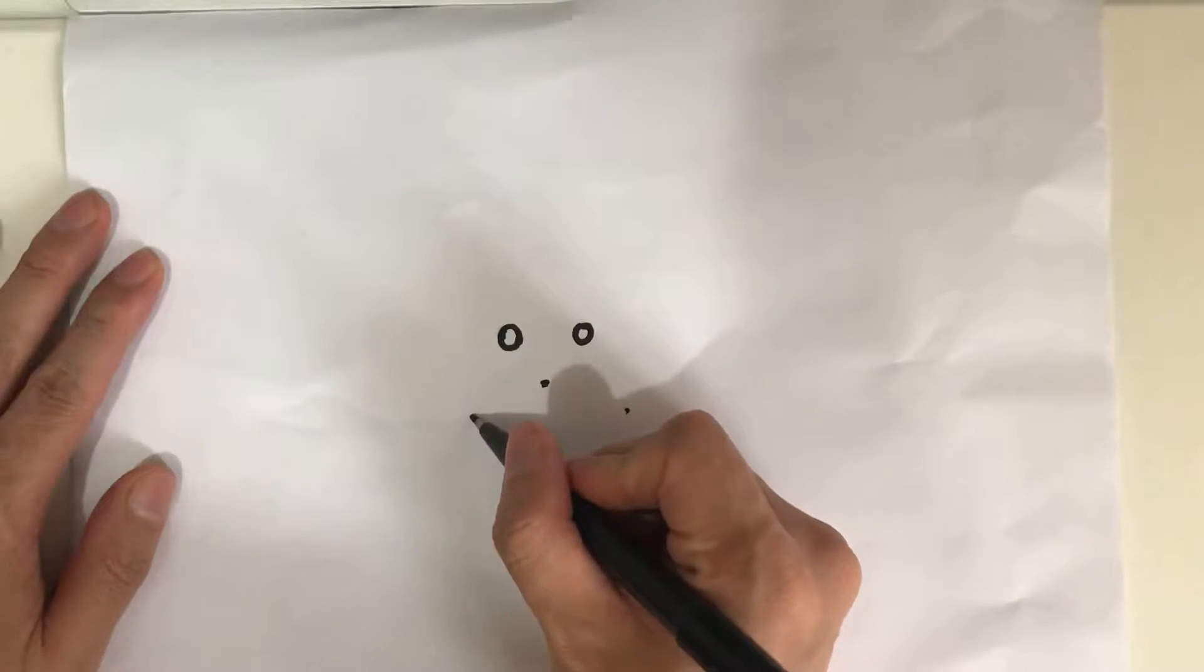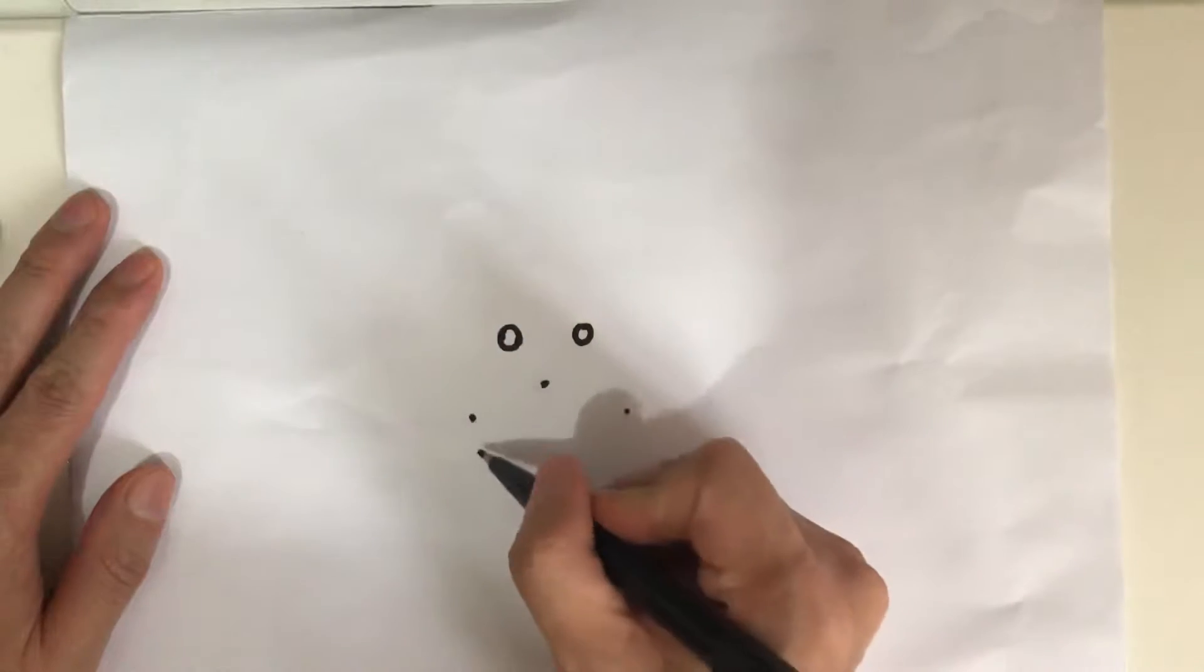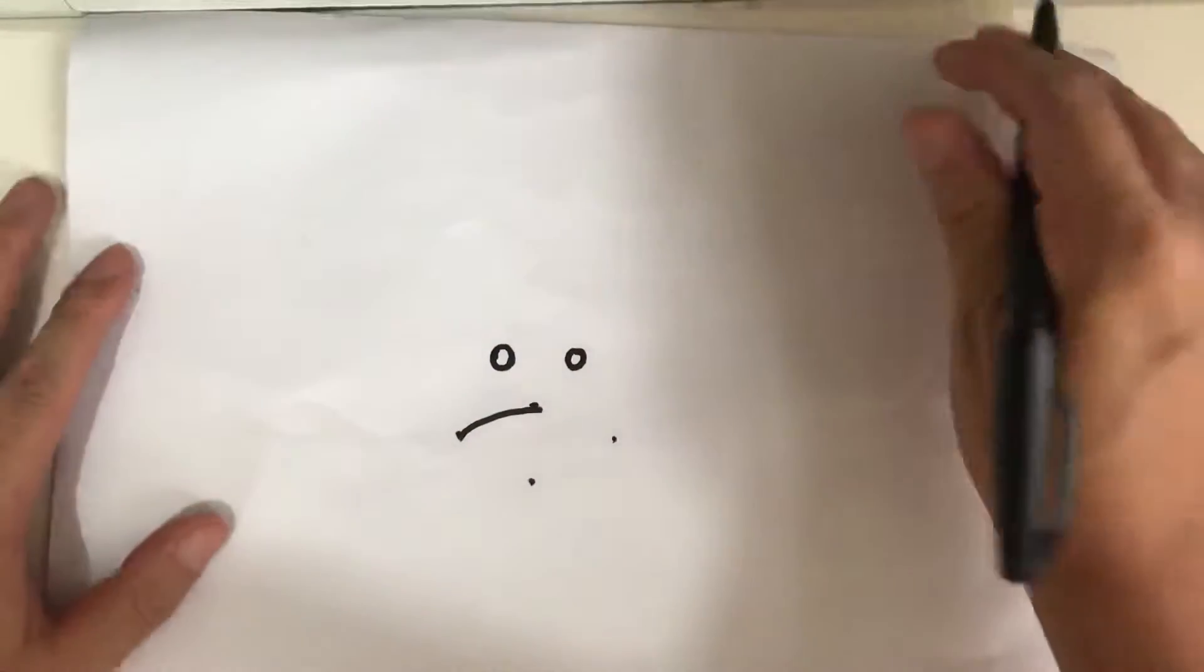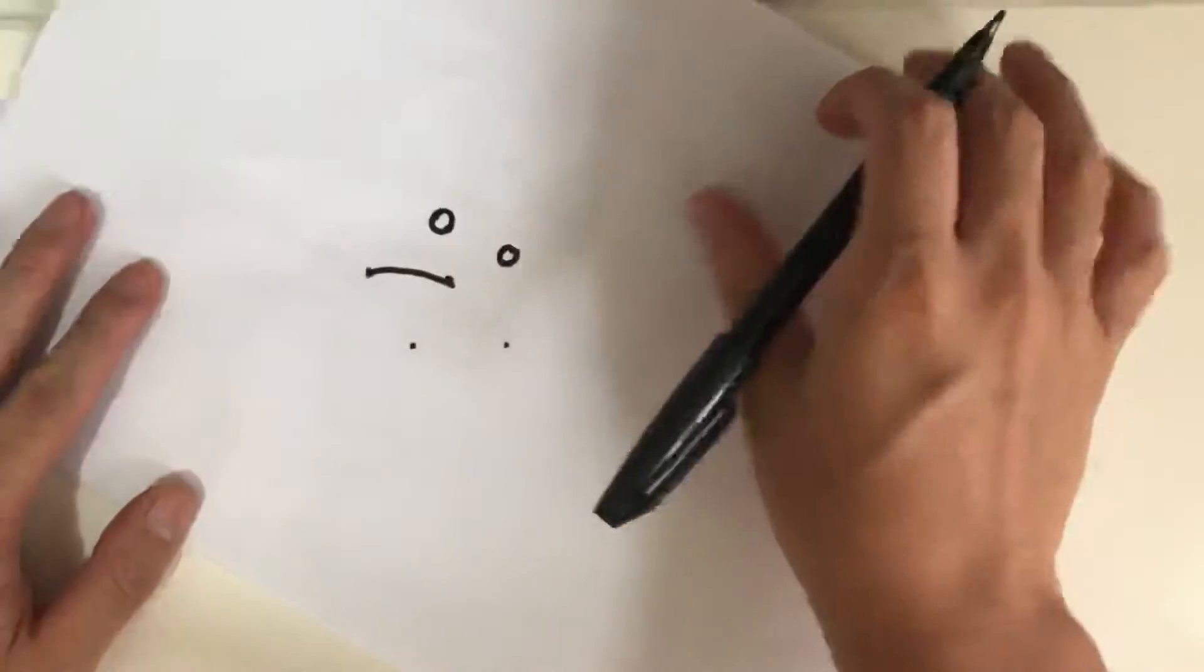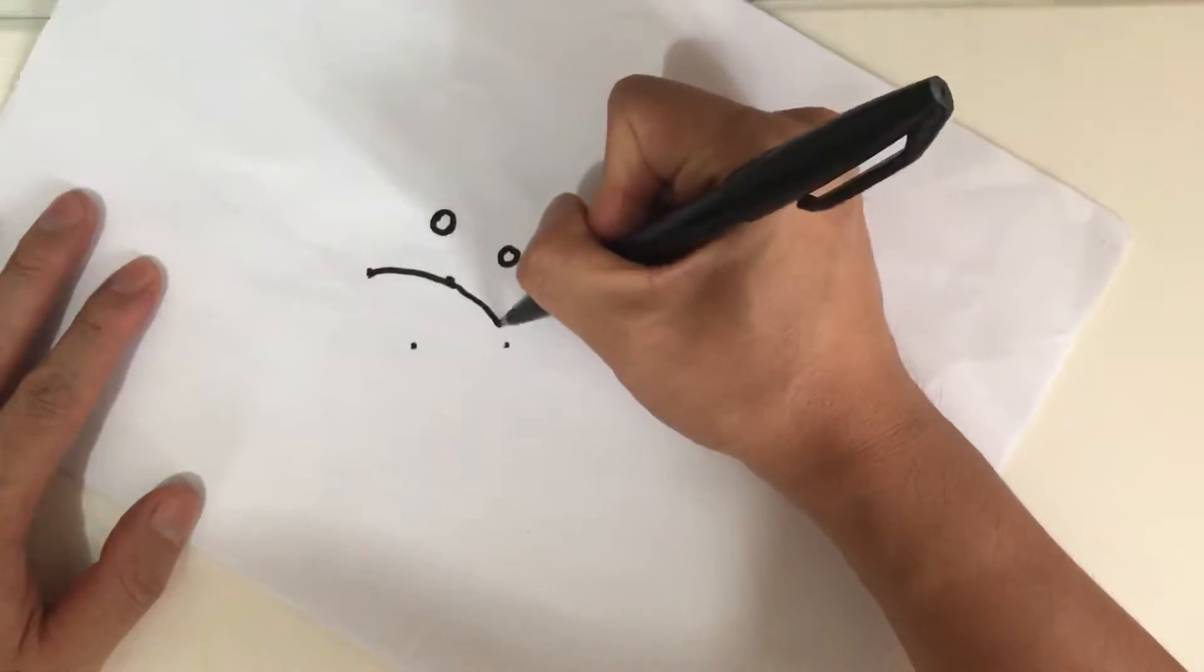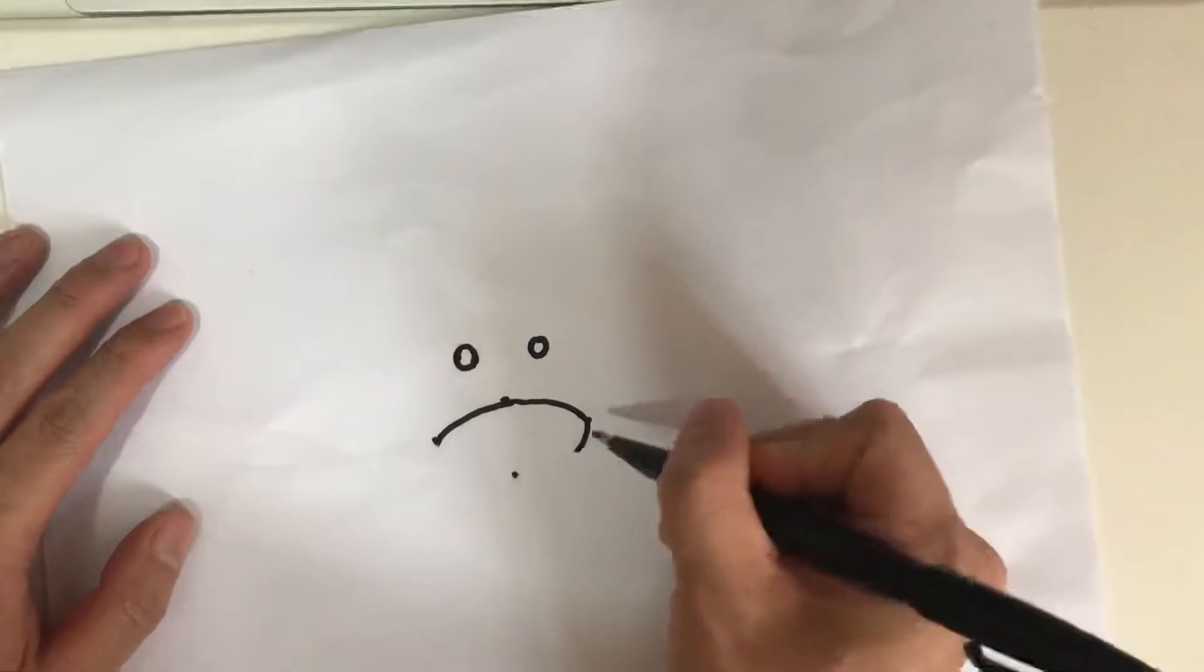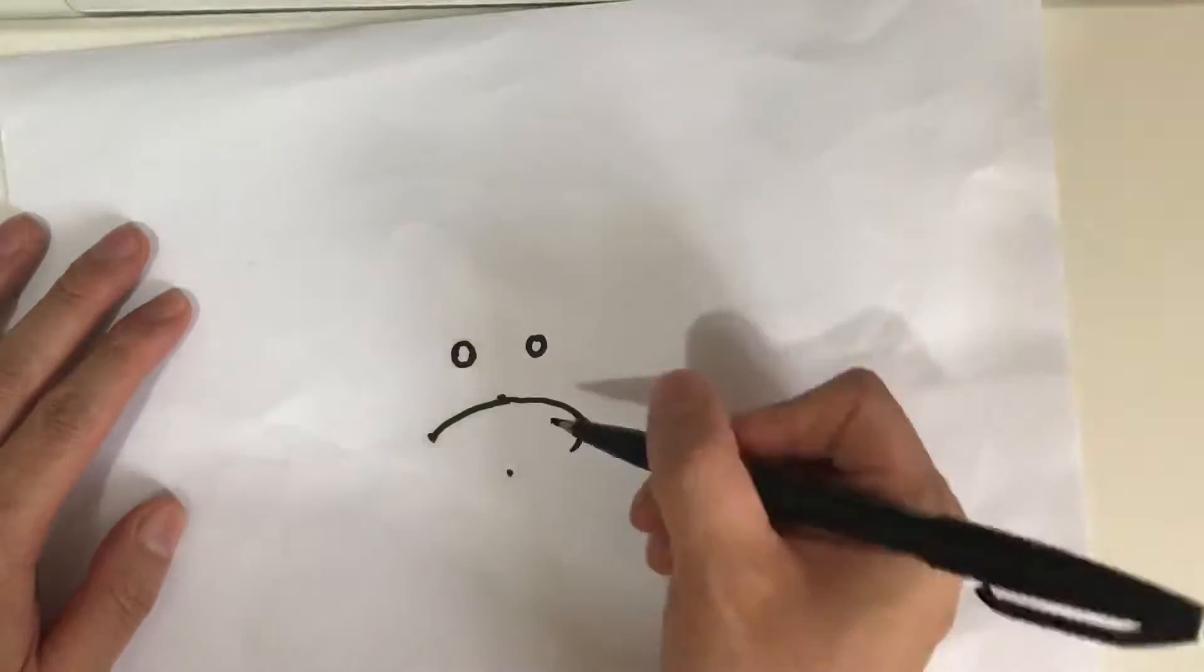Then I connect with one curve, then another curve. I turn it, turn it. Make sure it's kind of a curve, like this.